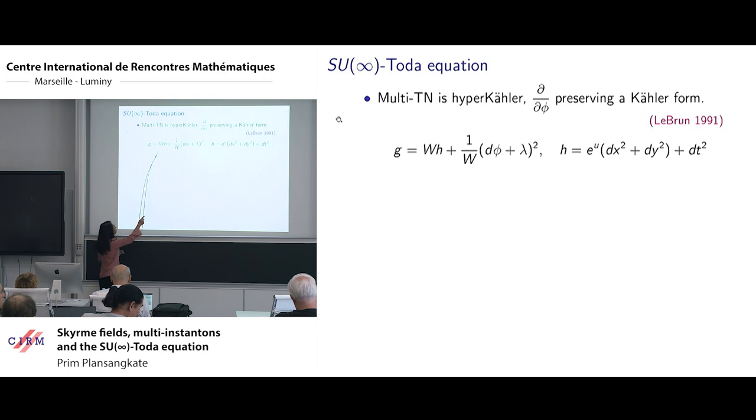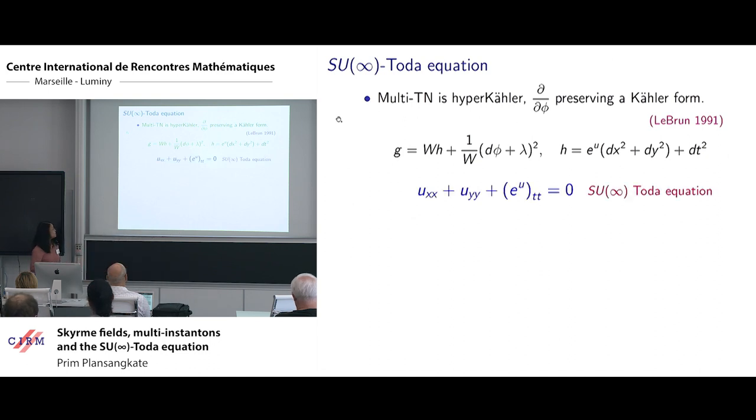The function W, the metric H and the one form lambda are defined on the space of orbits. There exists coordinates on the space of orbits, the X, Y, T coordinates, such that the metric can be written in this form. And U is a solution of the SU infinity Toda equation.